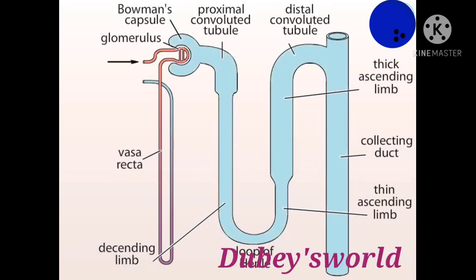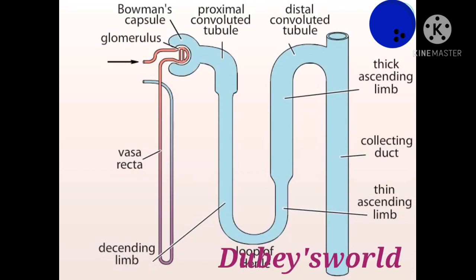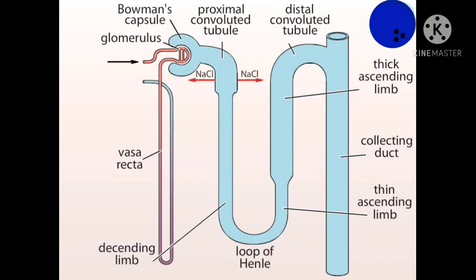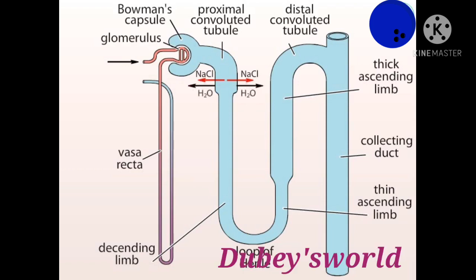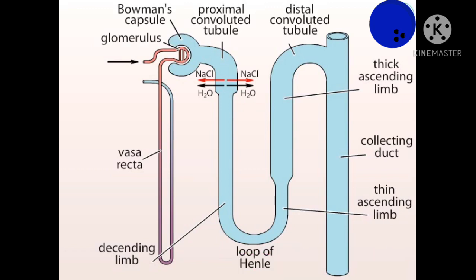The proximal convoluted tubule is responsible for most of the reabsorption of water and solutes from the glomerular filtrate. The cells of this section of the nephron actively transport sodium ions and other solutes, such as glucose and amino acids, out of the tubule fluid. The active transport of solutes out of the proximal convoluted tubule into the tissue fluid causes water to flow by diffusion. The water and solutes moved into the tissue fluid are taken up by the peritubular capillaries and returned to the venous blood leaving the kidney.